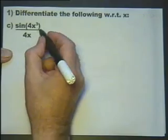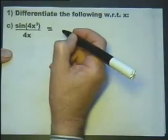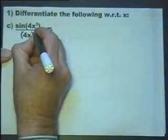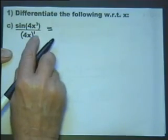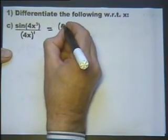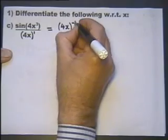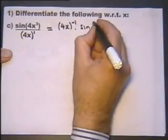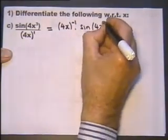So let's look at this again, start by rewriting the question. If I put a bracket round there, we can consider that as being raised to the power of 1. So we can write that as 4X raised to the power of minus 1, multiplied by the sine of 4X cubed.